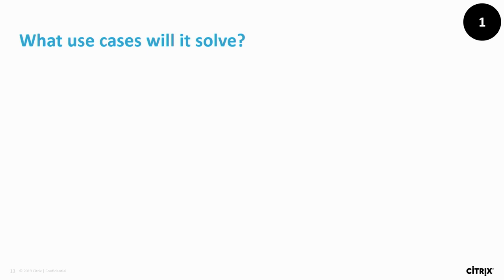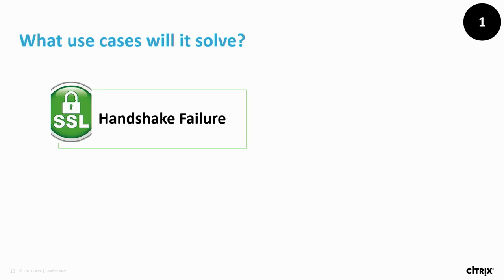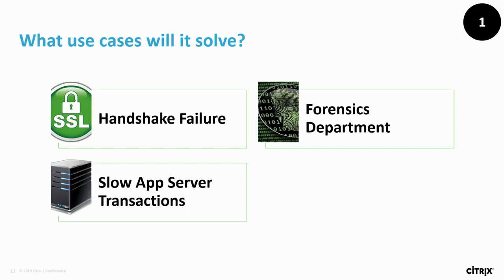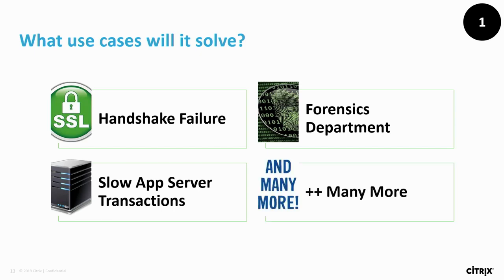What use cases can we solve with detailed Web Transaction Logging? It can help with a lot of troubleshooting. For example, you should be able to understand an SSL handshake failure — why did it happen, when did it happen, what are the parameters? With forensic departments, when you need to send full logs, you'll be able to do so. Another use case: with a slow server, you can understand why and where exactly back-end server latency happens. We also provide actionable analytics — what do we need to do next, and how can we help you be more intelligent?